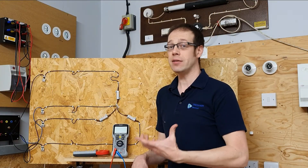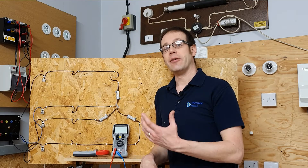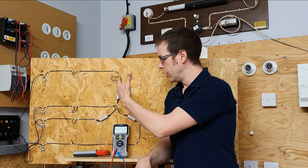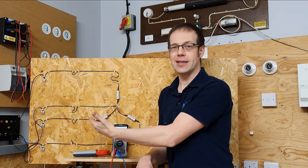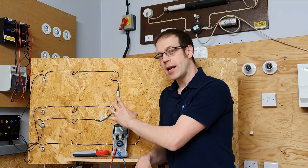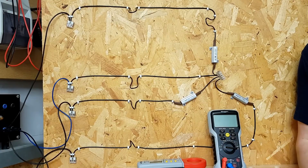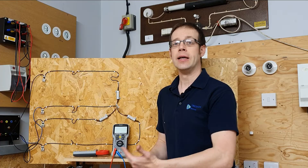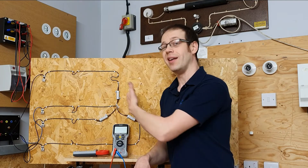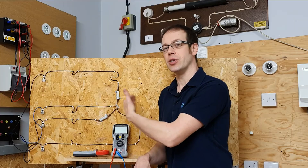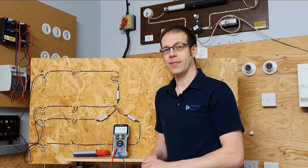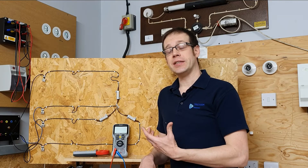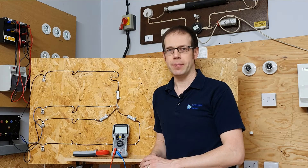As you'll see in the next video, the delta connection looks very different. When we look at a star connected load we lay it out graphically like this as a demonstration piece, but in reality the three loads don't necessarily have to sit 120 degrees apart physically. It does help us to see the relationships between the voltages and the currents, so let's start thinking about those.